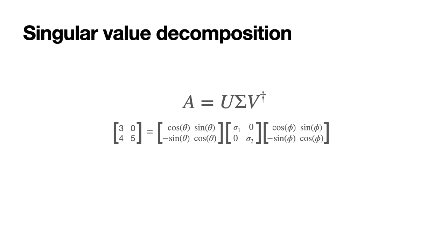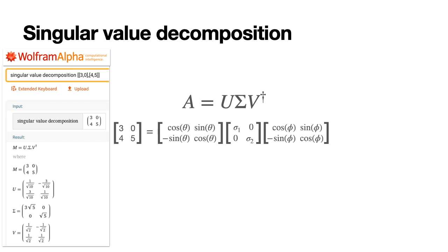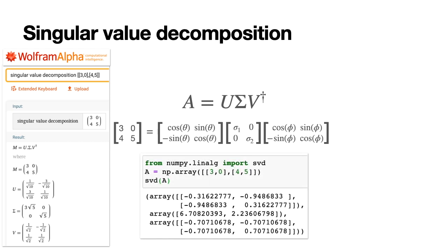Now, how do we find this decomposition? There are mathematical ways — not too different from finding eigenvalues and eigenvectors — but I'll leave that for another video. For now, I have two great ways to do it: one is using Wolfram Alpha, which is free online; the other is using the NumPy package in Python, which has a very simple function called SVD.